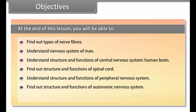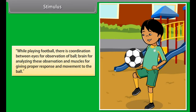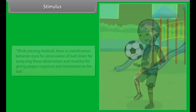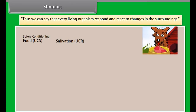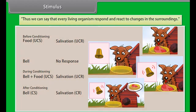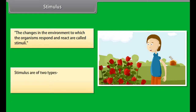While playing football, there is coordination between eyes for observation of the ball, brain for analysing these observations, and muscles for giving proper response and movement to the ball. Every living organism responds and reacts to changes in the surroundings. The changes in the environment to which organisms respond and react are called stimuli.